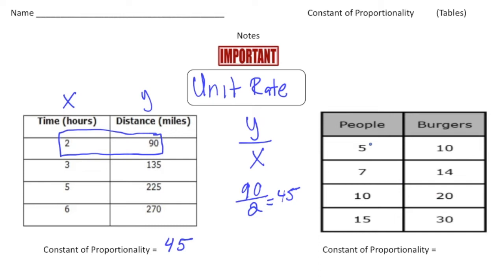Let's do one more. Here we have data about people and burgers. The number of people is the x value and burgers is the y value. I'm going to use this column right here — the 10 and the 20. Again, to get the unit rate you do the y value divided by the x value, so it's 20 divided by 10.